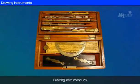A drawing instrument box consists of a large-size compass, large-size divider, small-size bow pen, bow divider, and lengthening bar.